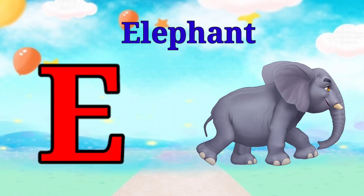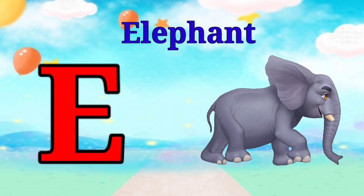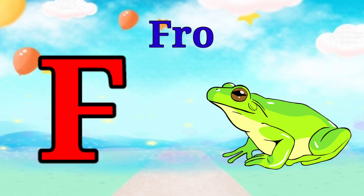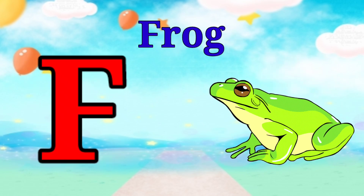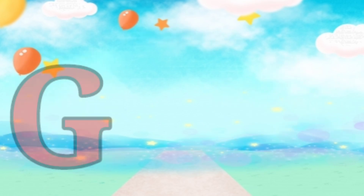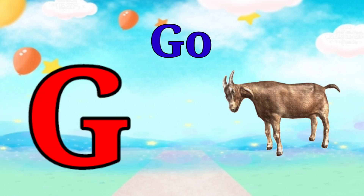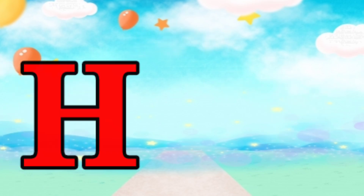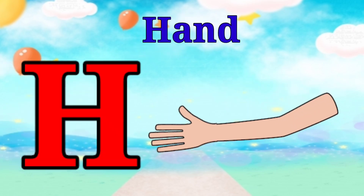E is for elephant, e-e-elephant. F is for frog, f-f-frog. G is for goat, g-g-goat. H is for hand, h-h-hand.